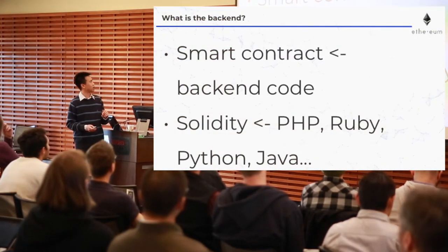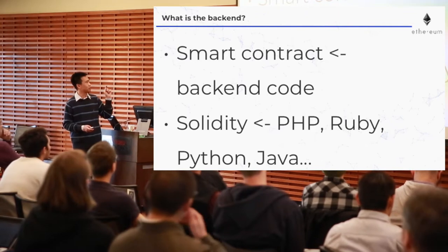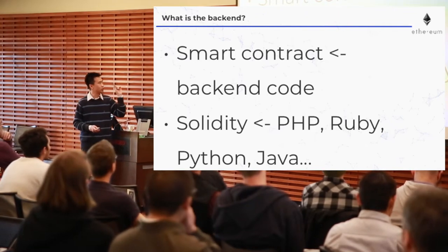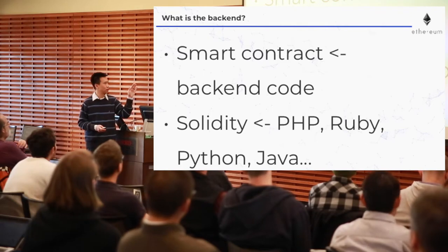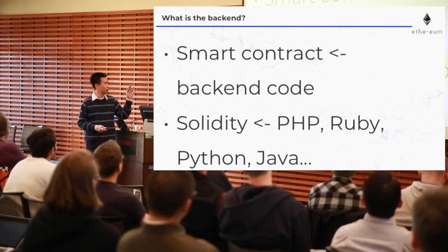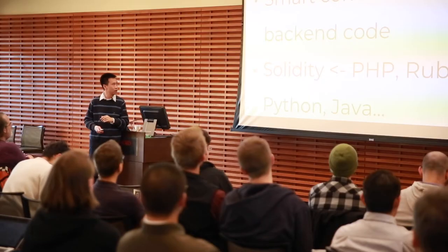So where's the backend? The smart contract is the equivalent of your backend code. One of the popular languages for writing smart contracts is Solidity — that's just like PHP or Ruby, equivalent like that.